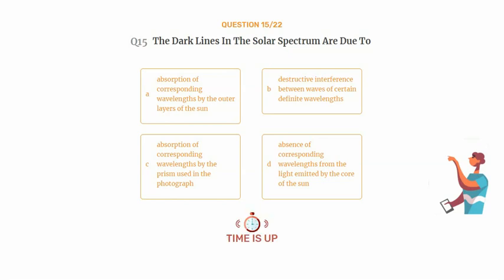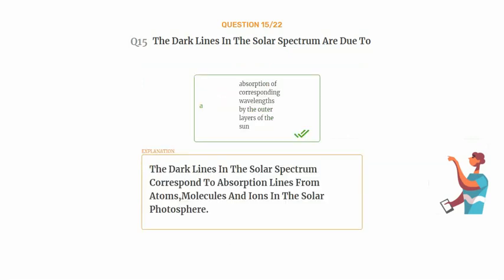The correct answer is Option A: Absorption of corresponding wavelengths by the outer layers of the sun. The dark lines in the solar spectrum correspond to absorption lines from atoms, molecules and ions in the solar photosphere.